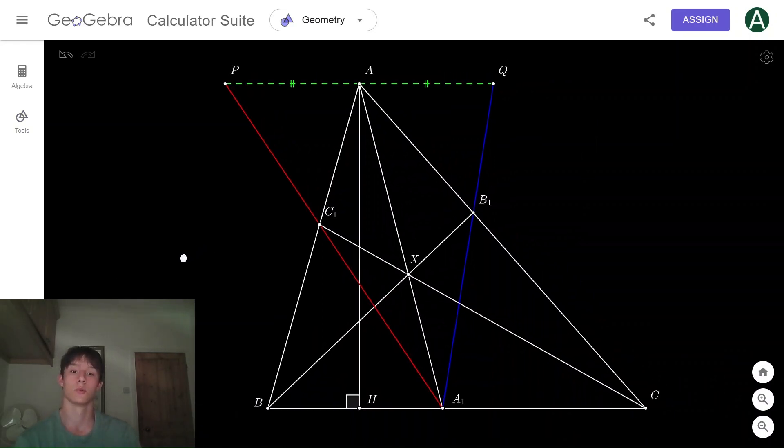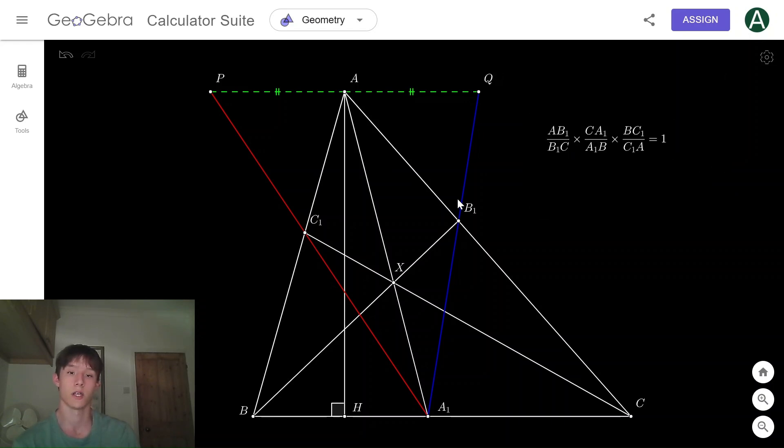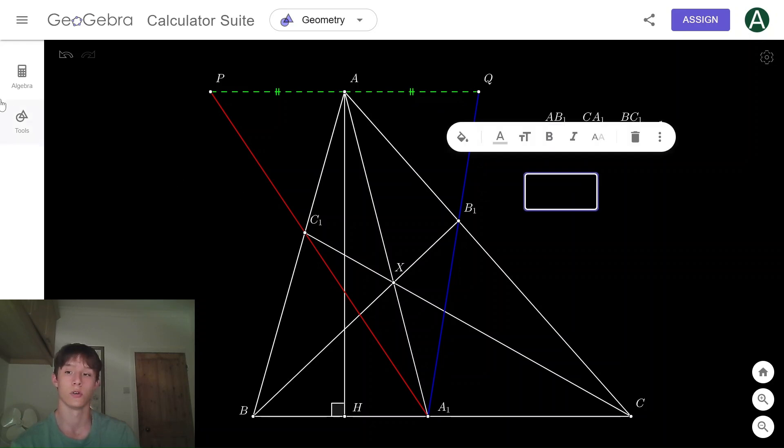In order to prove this, we don't need anything but Ceva's theorem. The Ceva's theorem is the following: if you have AB1/B1C times CA1/A1B times BC1/C1A, this fraction equals one. The other thing is that we know AQ is parallel to A1C.